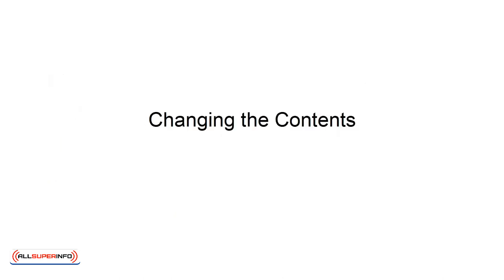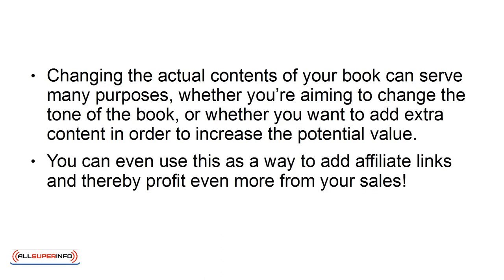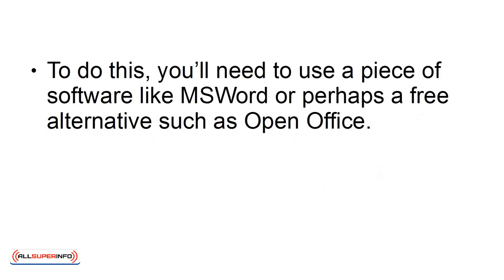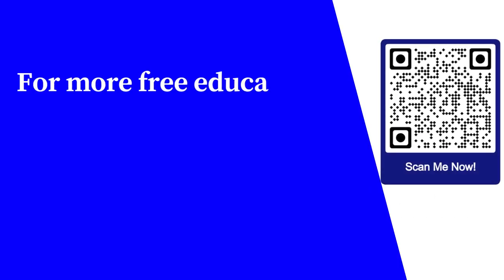Changing the Contents. Changing the actual contents of your book can serve many purposes, whether you're aiming to change the tone of the book or whether you want to add extra content in order to increase the potential value. You can even use this as a way to add affiliate links and thereby profit even more from your sales. To do this, you'll need to use a piece of software like MS Word or perhaps a free alternative such as OpenOffice. Just don't forget to save your final product as a PDF file so that your readers won't be able to make changes as well.